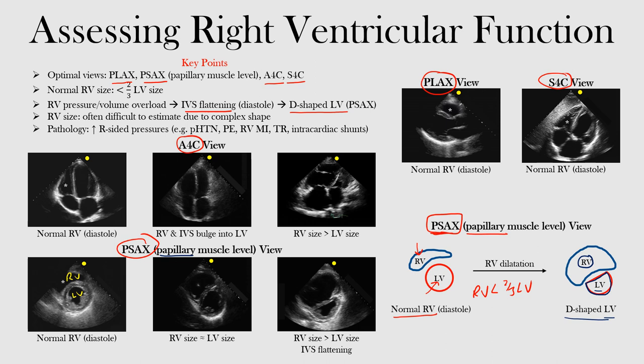If you're not aware of any of these views or the windows used to obtain them, go back and listen to the earlier lectures that explain how to obtain the different levels within each window. Here we have the right ventricle and the left ventricle — that's normal diastole, normal size. Notice that the right ventricle is smaller than the left ventricle. Now in the second image, the right ventricle is bigger, almost the same size as the left ventricle.